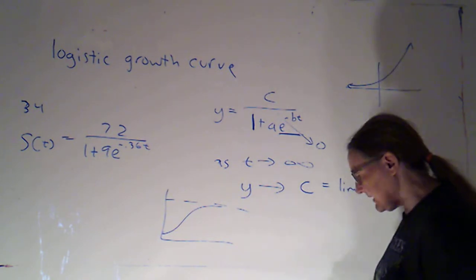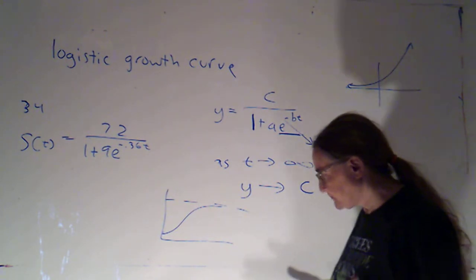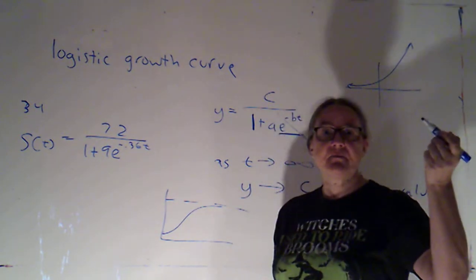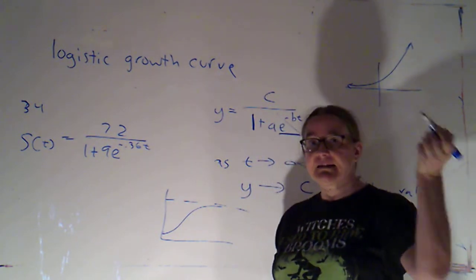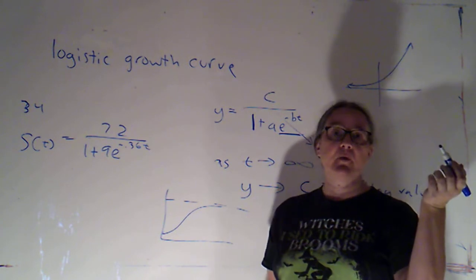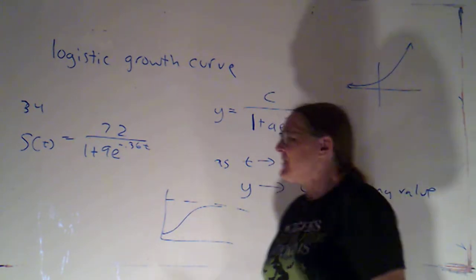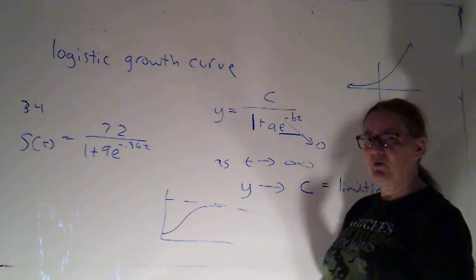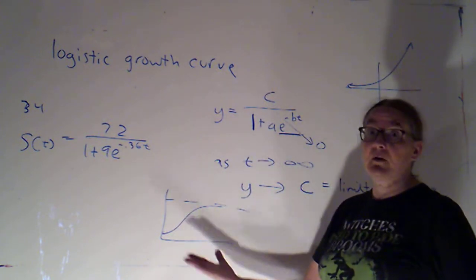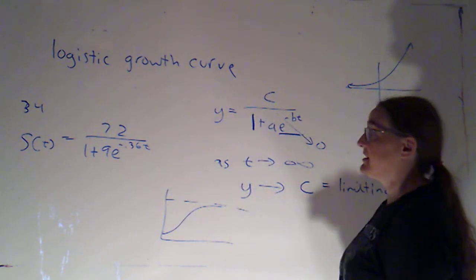I mean, if I'm selling whiteboard markers, I'm not going to expect that I can sell an infinite amount of whiteboard markers, because there's going to be a finite demand. So, that limiting value would be the total amount that I would expect to be able to sell.